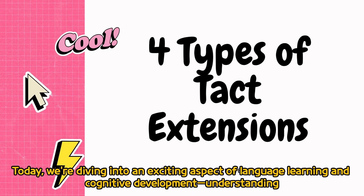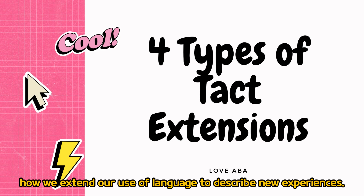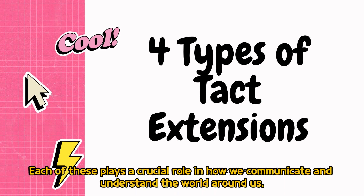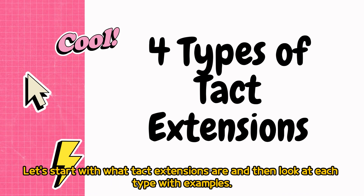Good morning! Today we're diving into an exciting aspect of language learning and cognitive development: understanding how we extend our use of language to describe new experiences. Specifically, we'll explore the four types of tact extensions — generic, metaphorical, metonymical, and solacistic. Each of these plays a crucial role in how we communicate and understand the world around us. Let's start with what tact extensions are and then look at each type with examples.